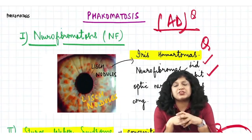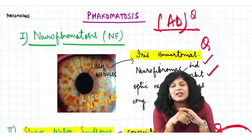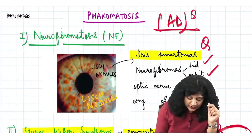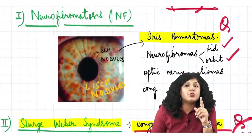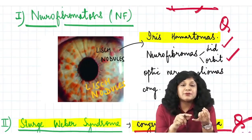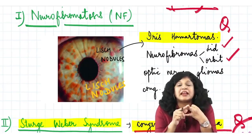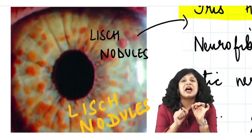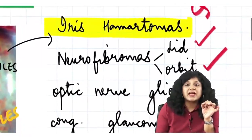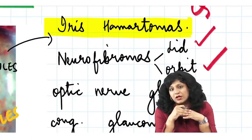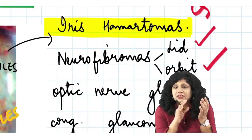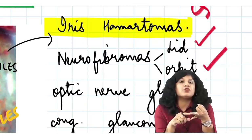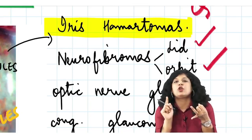Neurofibromatosis belongs to the phakomatoses — neurocutaneous syndromes presenting with both systemic features and ocular manifestations. The key ocular manifestation of NF1 is Lisch nodules. These brownish nodules on the iris are iris hamartomas — not retinal hamartomas. So the patient with café-au-lait spots and axillary freckling has neurofibromatosis with iris hamartomas, not retinal hamartomas.